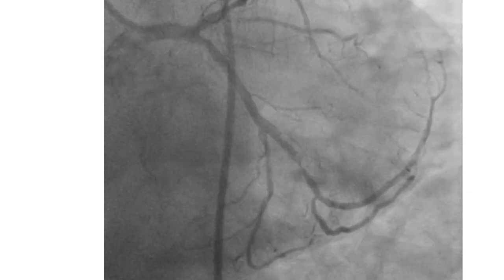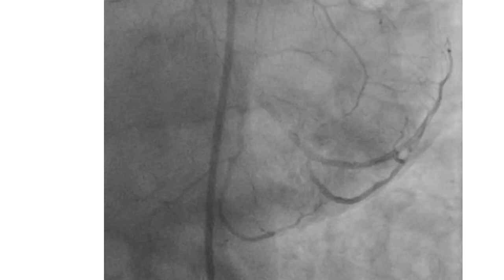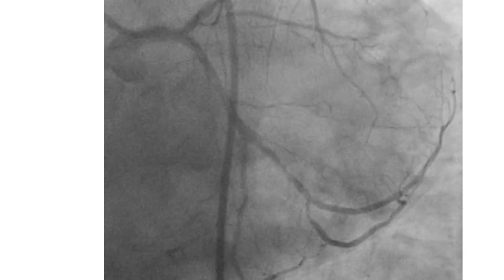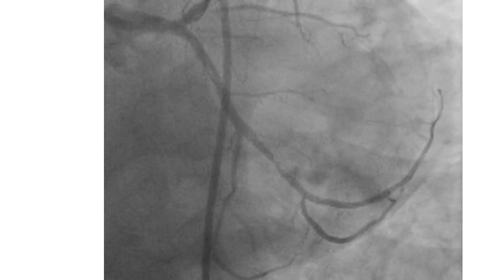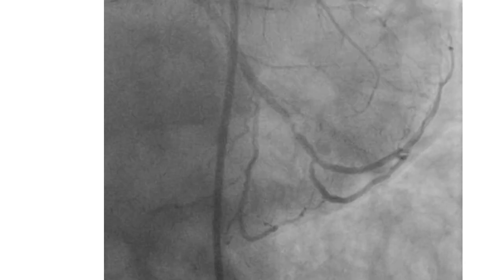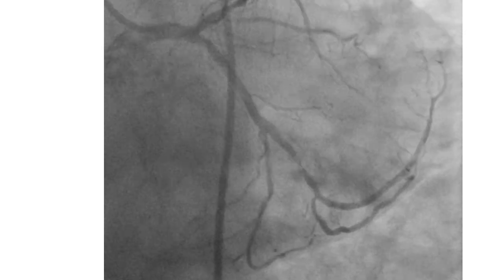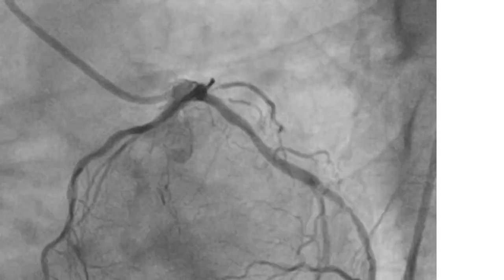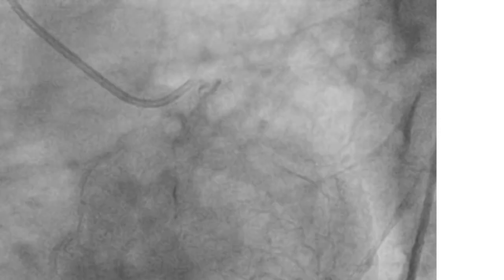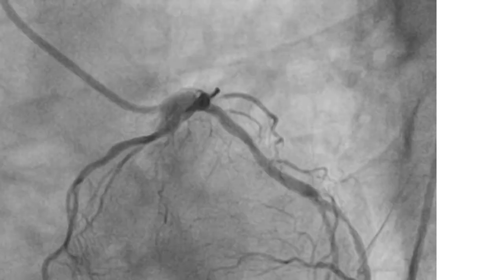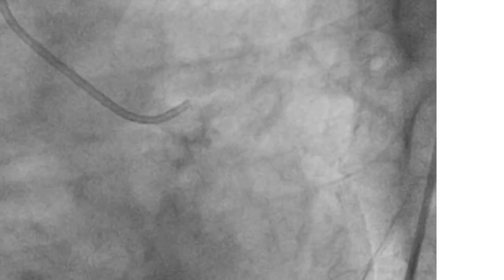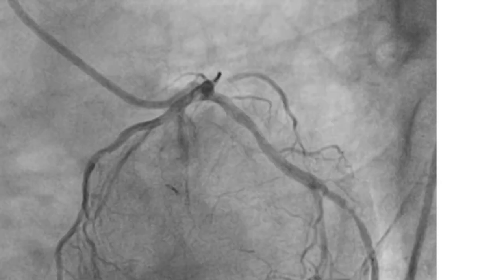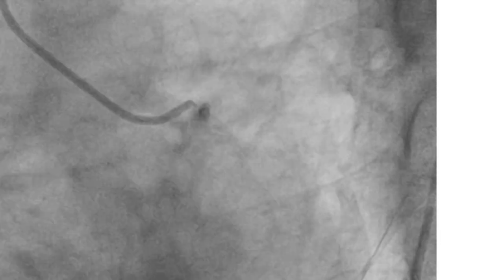This is another example. Spider caudal view shows the left circumflex with a critical lesion in a large OM. Look at the proximal circ. It looks okay, although one can identify some haziness. The orthogonal view here is the LAO projection. We can see a stenosis in the proximal circ that was not seen in the spider caudal view, although it's not critical.